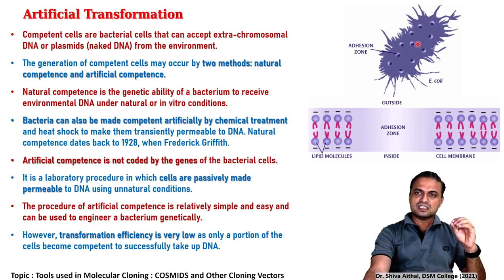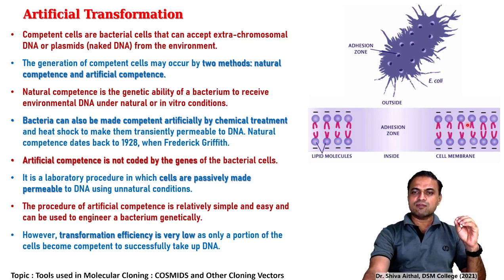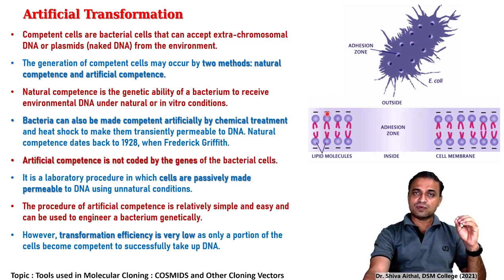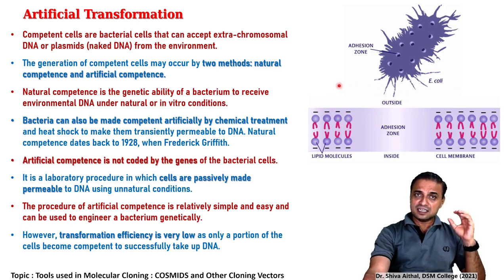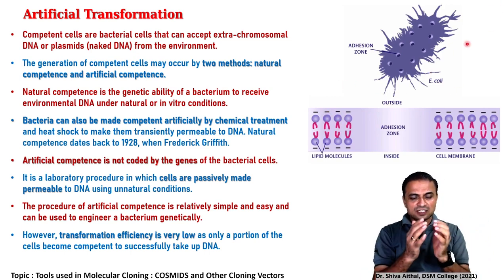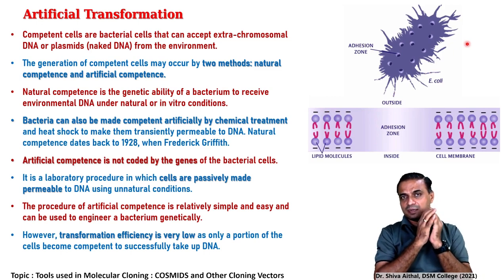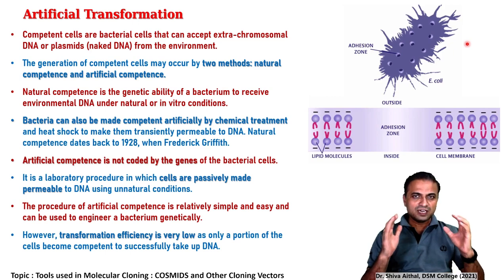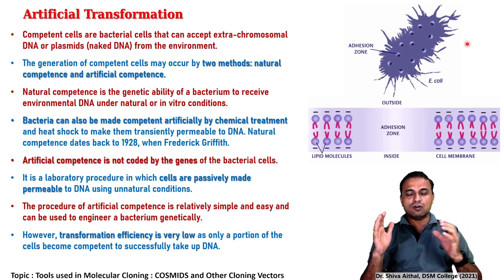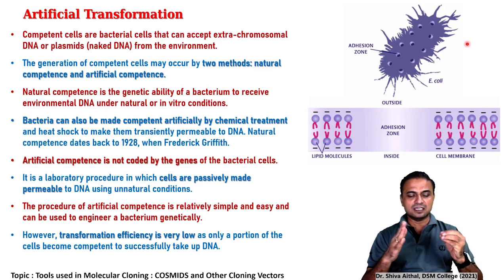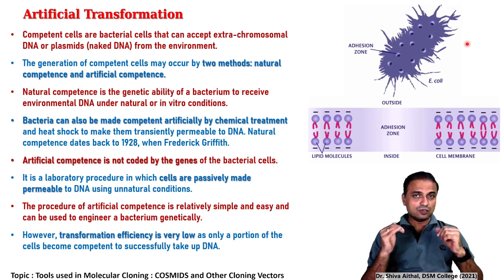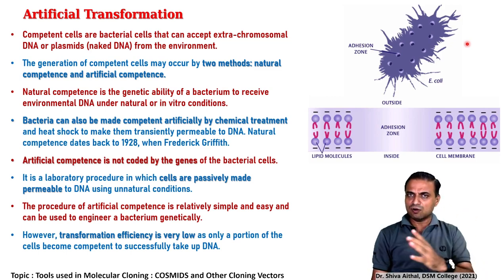Competent cells create adhesion zones or pore-like structures. The cell membrane is made up of a phospholipid bilayer, and the phosphates on the outer surface are negatively charged. The DNA is also negatively charged — therefore there is a hydrophilic repulsion by the cell. This negative-negative repulsion makes it very difficult to introduce DNA inside a host under natural conditions, hence we have the artificial method.